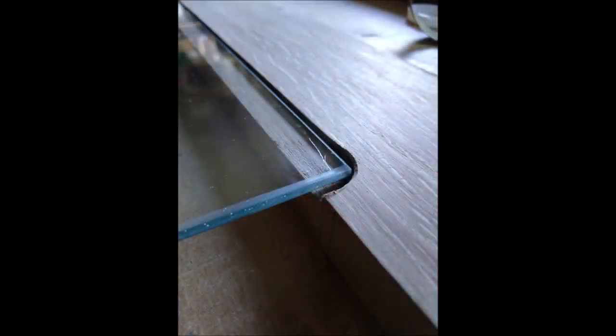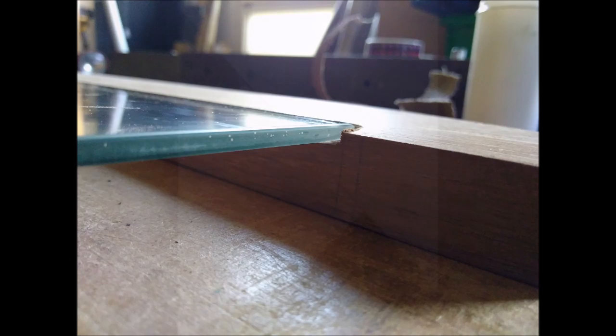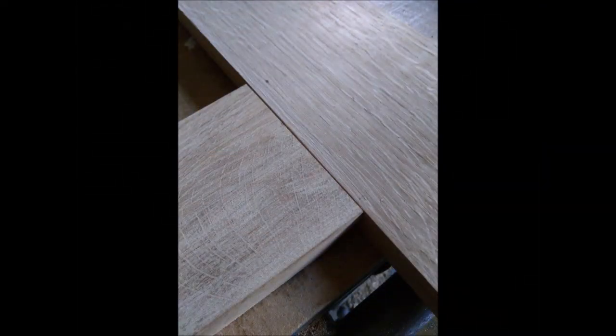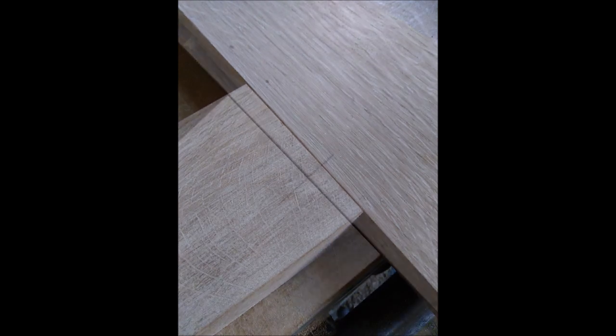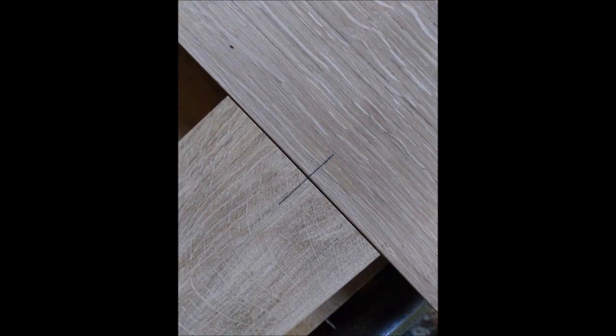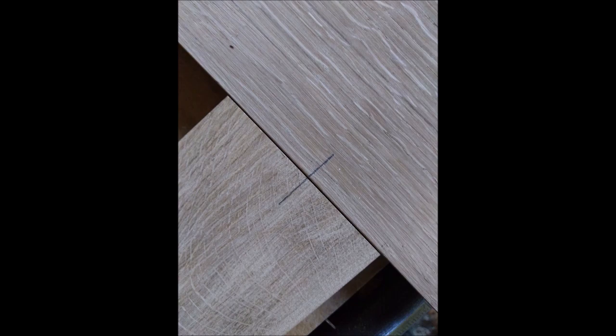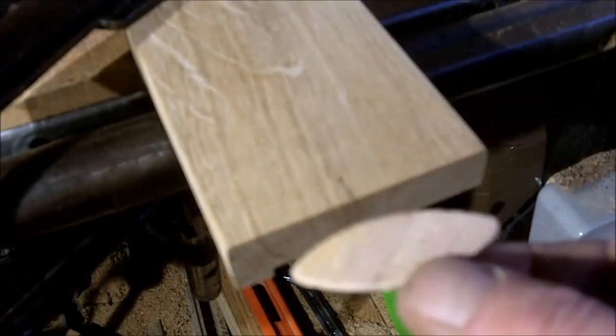Here you can see the glass sitting in the rebate. Now I need to position the butt joint. Here I've marked two lines. This is where I'm going to add a biscuit. This will seriously strengthen the joint.